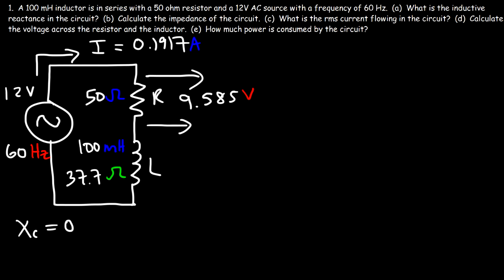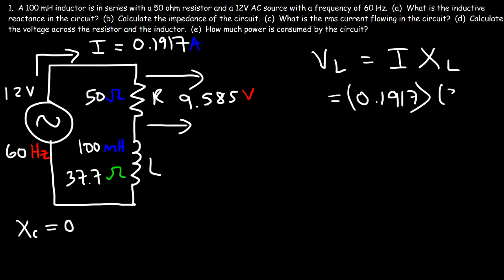Now let's do the same for the inductor. The voltage across the inductor is the current multiplied by the inductive reactance — 0.1917 times 37.7 ohms — which gives 7.227 volts.